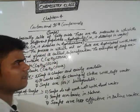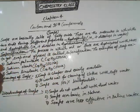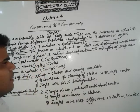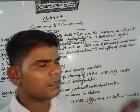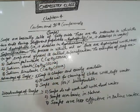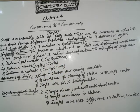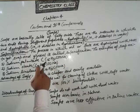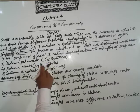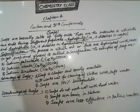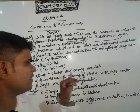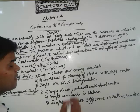Now, the saponification reaction: the process in which oils or fats are hydrolyzed with an alkali — which is sodium hydroxide — to get soap and glycerol is called the saponification reaction. Examples of soap are sodium palmitate (formula C15H31COONa), sodium linoleate (C17H34COONa), and sodium linoleate (C17H35COONa).